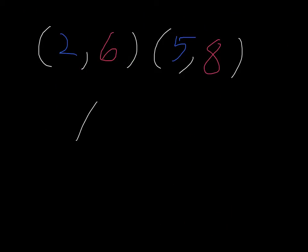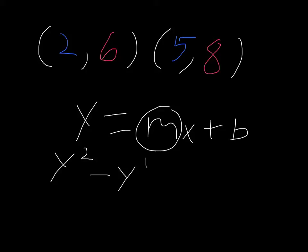First, in the equation y equals mx plus b, we need to find what m is, or the slope. In order to do that, we need to put y2 minus y1 over x2 minus x1, and this would be our slope.